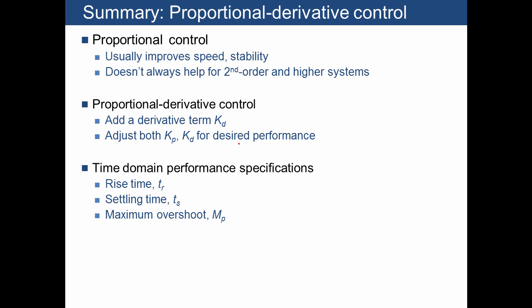And then we just talked about three ways that time domain performance specifications can be given that talk about how we want the system to behave and let us translate that information into desired closed-loop pole locations in terms of zeta and omega n.